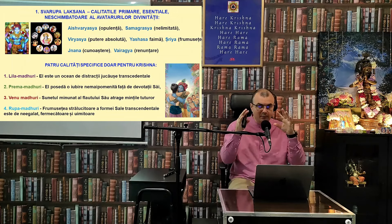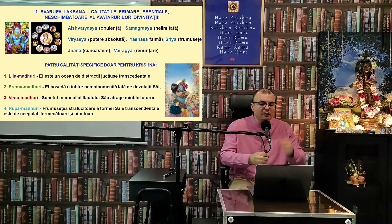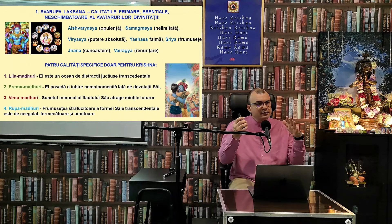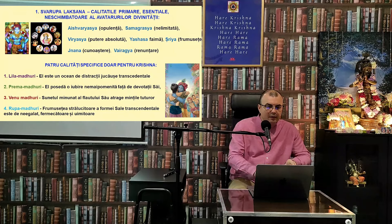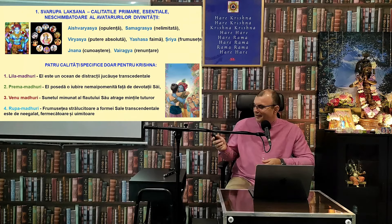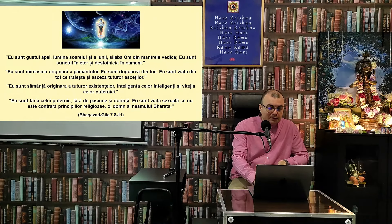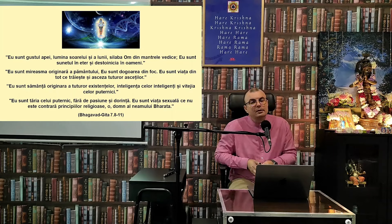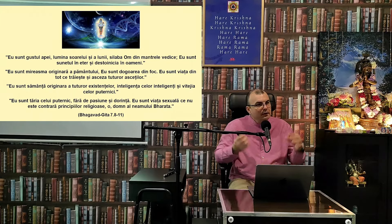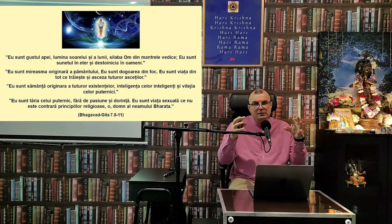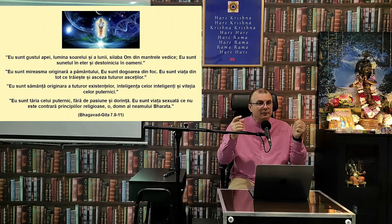Pe lângă calitățile personale primare ale Divinității Supreme, El posedă și calități secundare. Vom vedea versetele din capitolul 7 din Bhagavad Gita în care El singur își descrie calitățile secundare, Tatasta Lakshana — diferite opulențe, vibhuti. El descrie creația, cum se manifestă în cosmos, în diferite fenomene extraordinare ale naturii, în trăsături interesante ale personalităților, în talente și puteri extraordinare ale entităților vii.